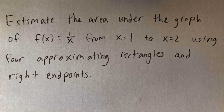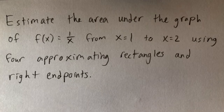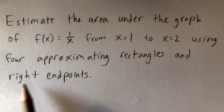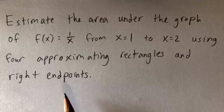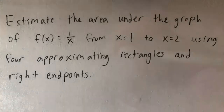Basically what we're doing here is estimating the area under a function or a graph using the right endpoint estimation method. So the first thing we should do, since we know we're using right endpoints, let's just start with the formula — jot down the formula for the right endpoint method.